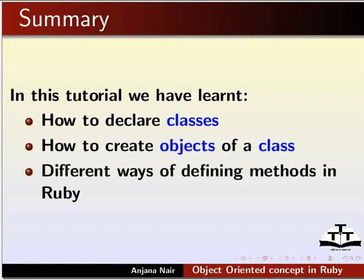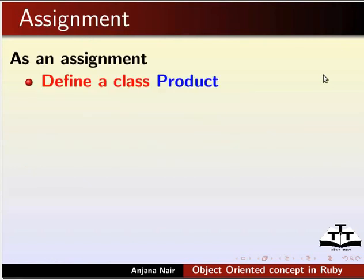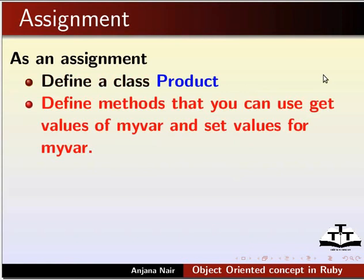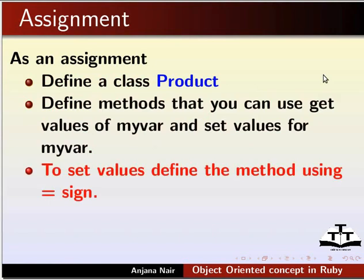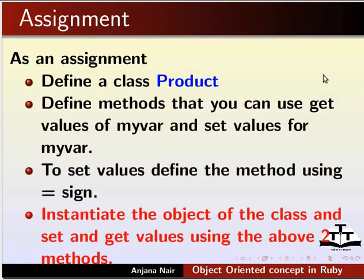In this tutorial, we have learnt how to declare classes, how to create objects of a class, and different ways of defining methods in Ruby. As an assignment, define a class Product. Define methods to get and set values of my_var — to set values, define the method using the equal to sign. Instantiate the object of the class and get and set values using the above two methods.